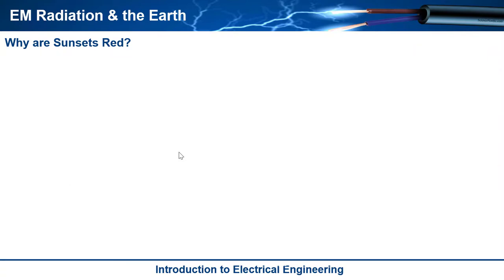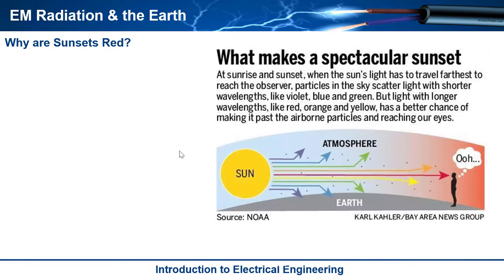So now why are sunsets red? Well, this one's interesting. If you think about where you're standing relative to the sun, when the sun sets or rises, the light from the sun, which is white light, has to travel a longer distance to reach your eyes.